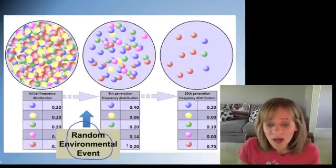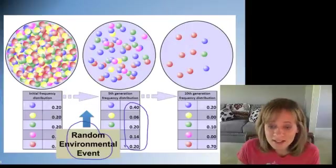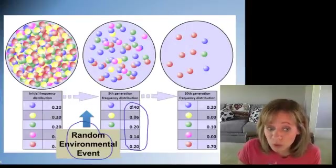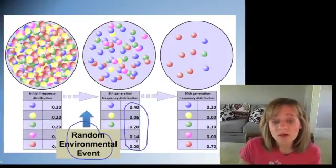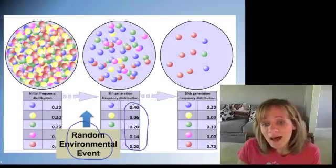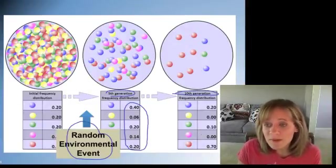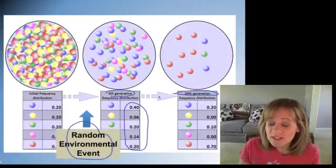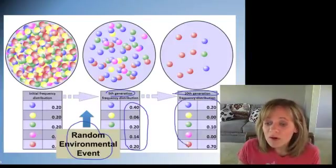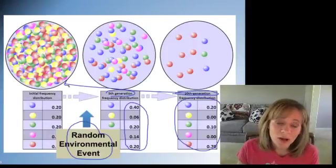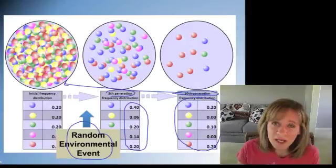Because of this, look how these distributions of individuals and their colors has now drastically changed. We have almost no yellow. We have far more blue. We actually have the same amount of green and red, and we have fewer pink. And now, we see from the fifth generation to the tenth generation, what has happened. Maybe natural selection has happened now, during this time. But now, our remaining population looks nothing like our original population. All because of this random environmental event.